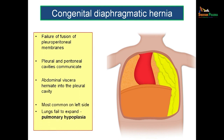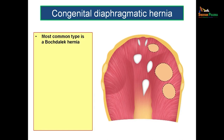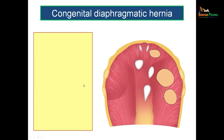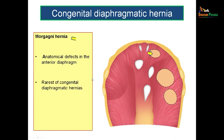Congenital diaphragmatic hernia is most common on the left side. The commonest variety is the Bochdalek hernia — the most common variety, seen posterolaterally, due to failure of closure of the diaphragm in the posterolateral aspect. Another variety is the Morgagni hernia — a defect in the anterior aspect of the diaphragm — said to be the rarest of the congenital hernias.